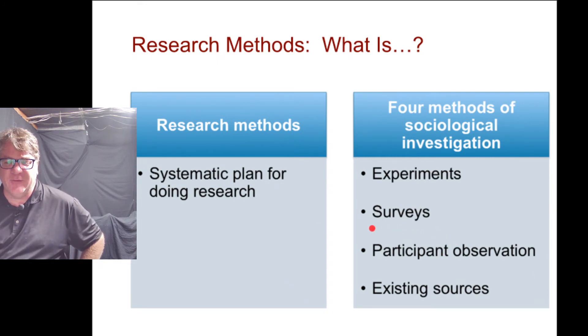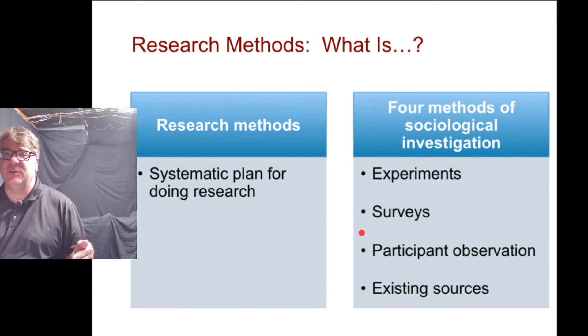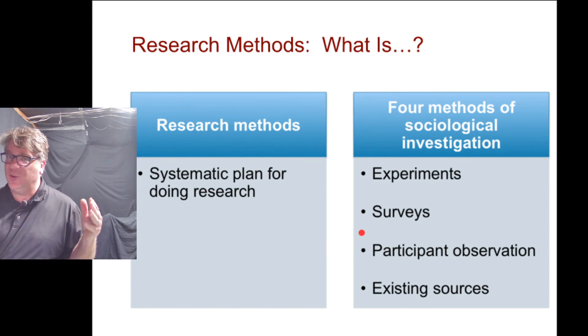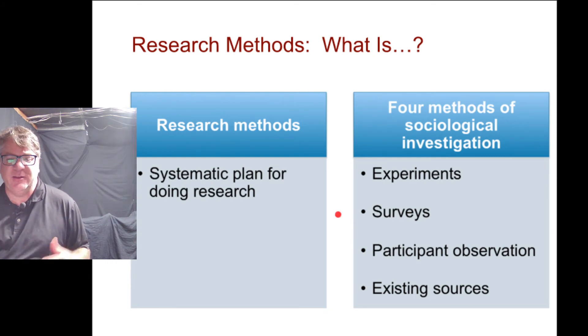I would not, I would say not experiments as much as this stuff right here. Surveys and participant observation. But even the design of a survey, for example, the census survey, it's funny, the Census Bureau is basically a collection of social scientists, a lot of sociologists. And they do research on how to do the surveys. Because the census survey is incredibly important for a number of reasons. Funding from the federal government to the states and communities, policies, representation. And so that data has got to be accurate.